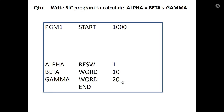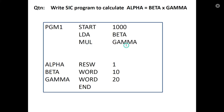Next step: LDA beta — accumulator equals beta, so accumulator content equals 10. Next, MUL gamma — accumulator multiplied by gamma value 20, so 10 into 20 is 200. Next step, STA alpha — accumulator content 200 is stored to alpha. This is the SIC program to calculate the expression alpha equals beta into gamma.